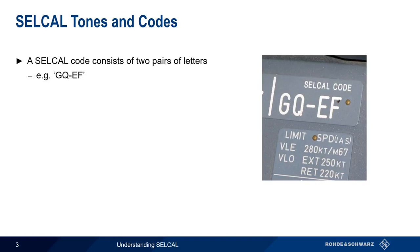This code is usually placarded somewhere in the cockpit and is permanent in the sense that the code is assigned to the aircraft, not to a specific crew, flight, etc. The permissible letters are A through S, with letters I, N, and O being unused.